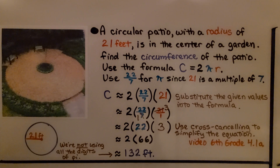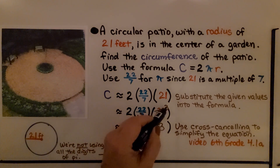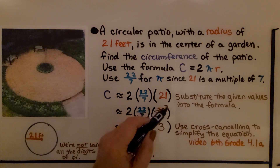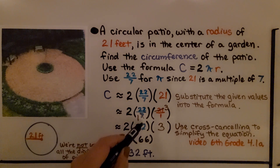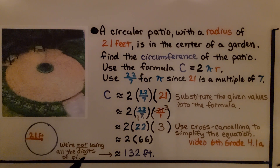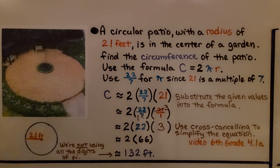Now we can use cross-canceling to simplify the equation. We can cancel the 7 off as a 1 and cancel the 21 off as a 3. That means we have 22 over 1 and 3 over 1, so we have 2 times 22 times 3. And 22 times 3 is 66. 2 times 66 is 132. So we're not using all the digits of pi, so we use an approximation symbol. The circumference of this patio going all the way around is approximately 132 feet.